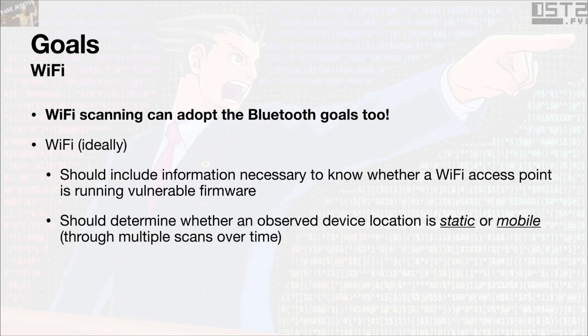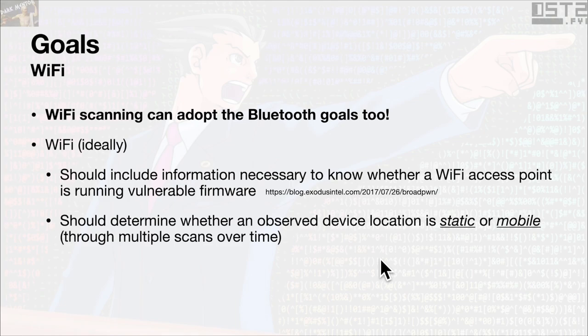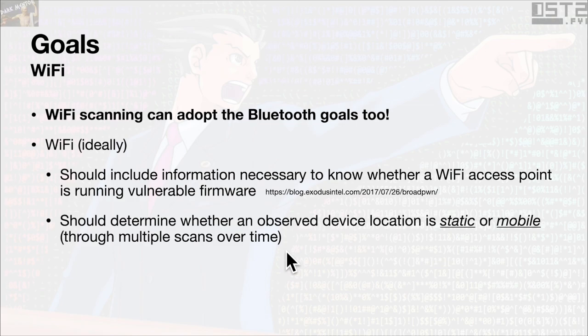Wi-Fi can totally adopt some of these same goals — for instance, knowing whether a Wi-Fi access point is running vulnerable firmware. That's important because of work like the Broadpwn vulnerability back in 2017, which got me interested in Bluetooth firmware vulnerabilities. They found pre-authentication packets you could just send to Broadcom-based Wi-Fi devices and exploit the device over the air. Unfortunately, today's Wi-Fi sniffing and stumbling doesn't actually get us the information we need to know whether a given device is vulnerable to these exploits or any future exploits.